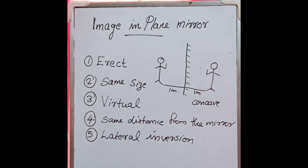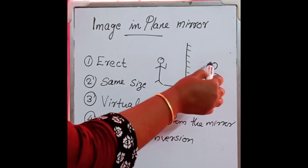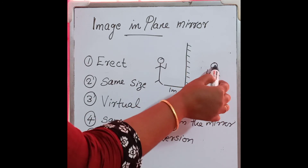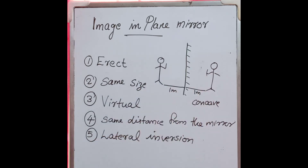To summarize, the characteristics of an image formed in a plane mirror are: the image is erect — same position as the object; the image is the same size as the object; the image is virtual; the object and image are at the same distance from the mirror; and the last one is lateral inversion. These are the characteristics of the image formed in a plane mirror.